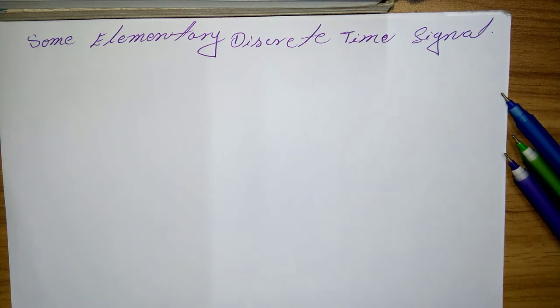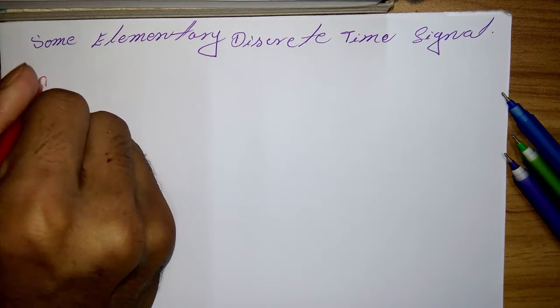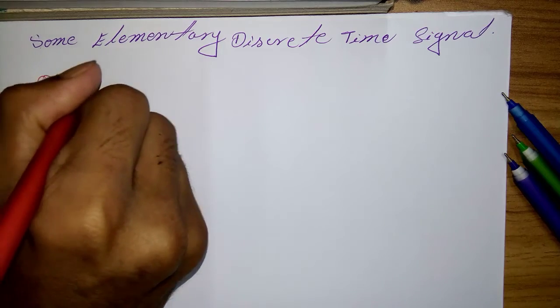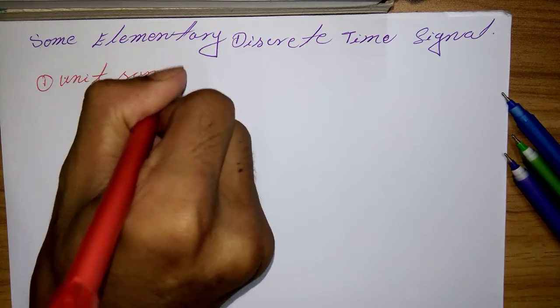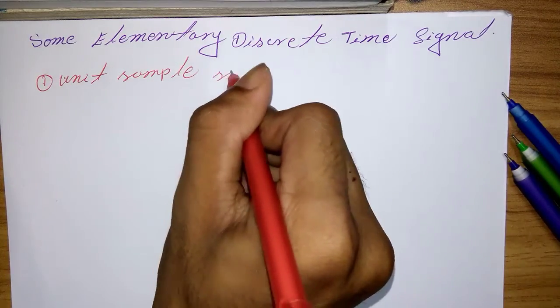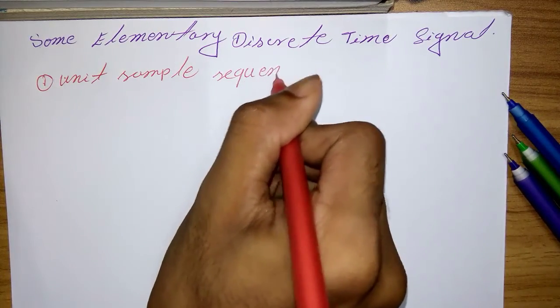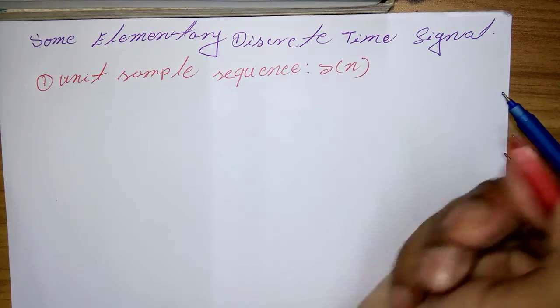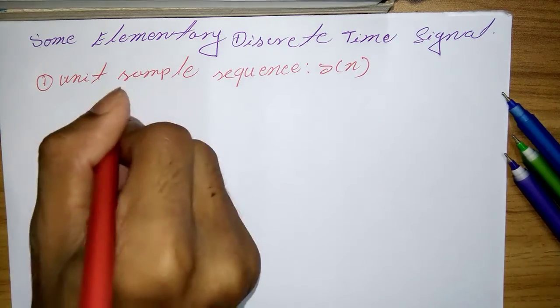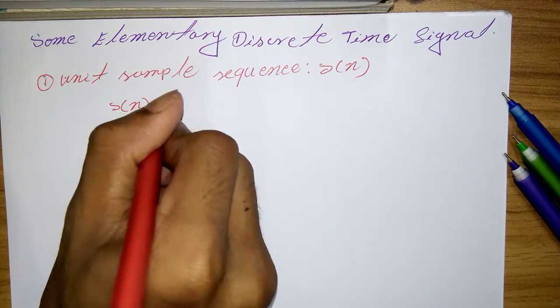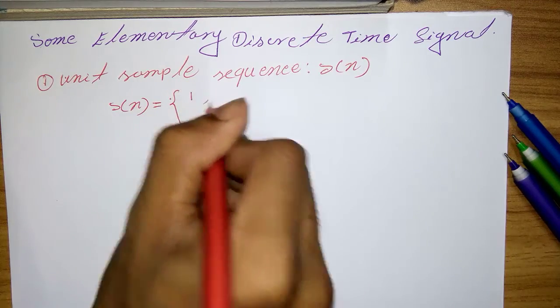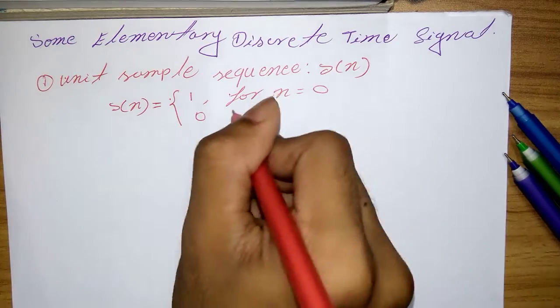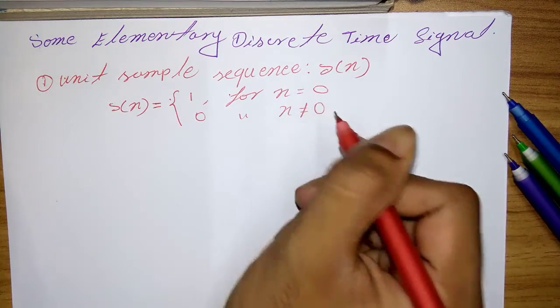These signals are defined below. First, unit sample sequence, which is denoted by delta of n. So delta of n, I just write the equation first: 1 for n equal 0 and 0 for n not equal 0.